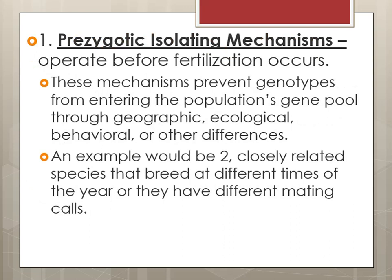The first one is called a prezygotic isolating mechanism. This is actually in play before fertilization can actually occur. These mechanisms prevent genotypes from entering a population's gene pool, usually due to a geographic, ecological, behavioral, or some other kind of difference. An example would be two closely related species that breed at different times of the year, or ones that have different kinds of mating calls. These work and happen before reproduction could even be considered.